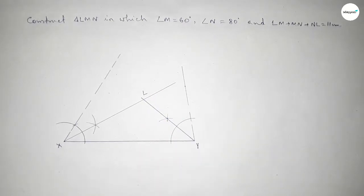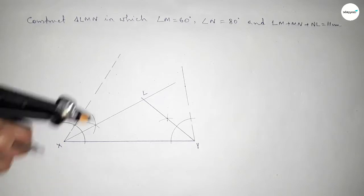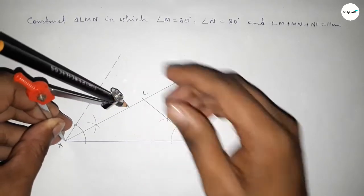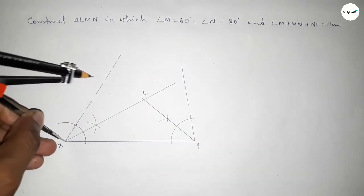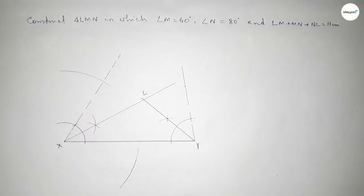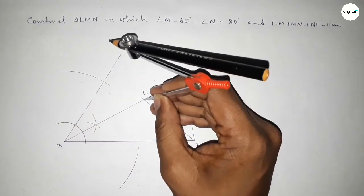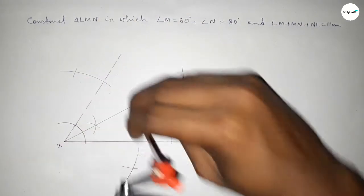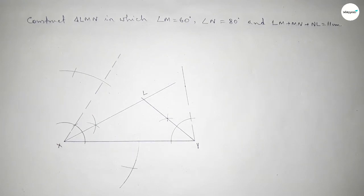Taking the intersection point as L. Next, we have to bisect the line LX. Putting the compass on L and taking greater than half of LX, drawing an arc. With the same length, putting the compass on X and drawing another arc.